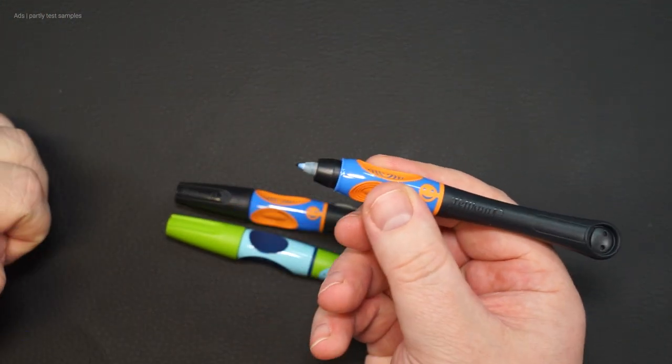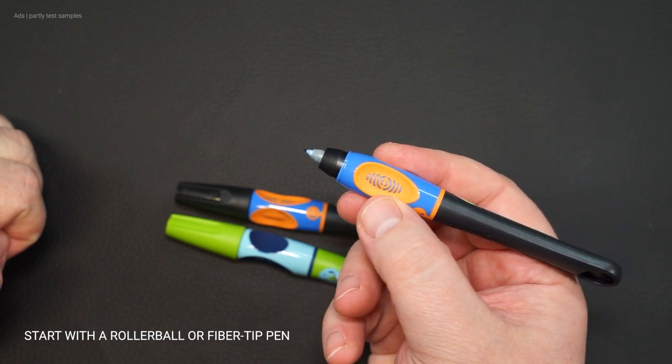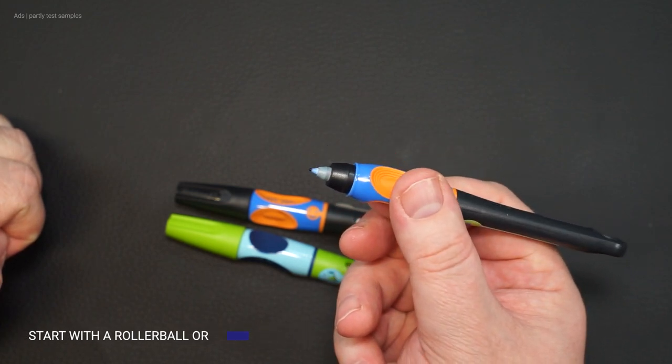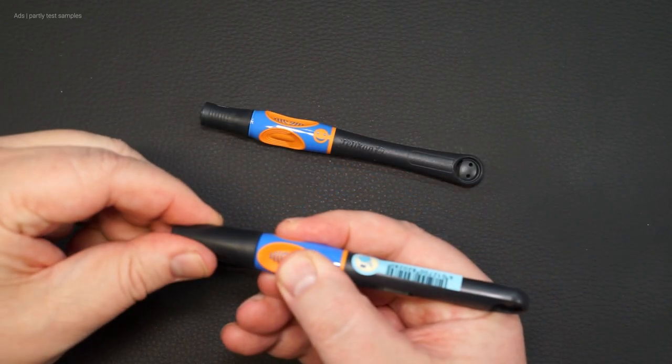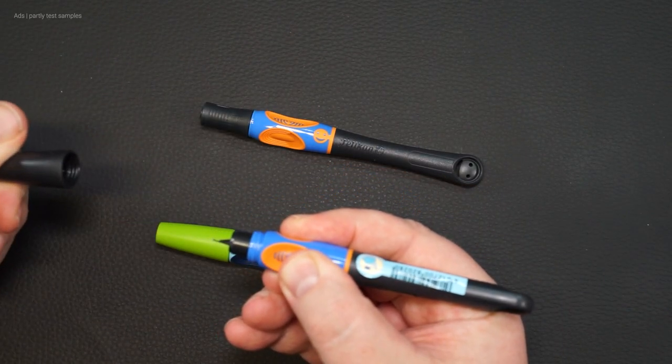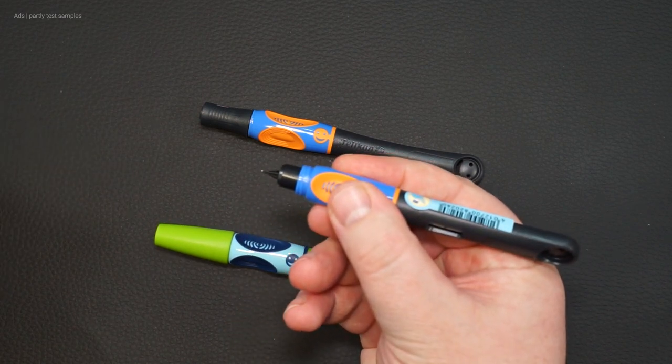Incidentally, most manufacturers recommend that children start with a rollerball pen from the learn to write range. These pens are less sensitive to pressure, but help with posture. What is meant by this will certainly become clear here.